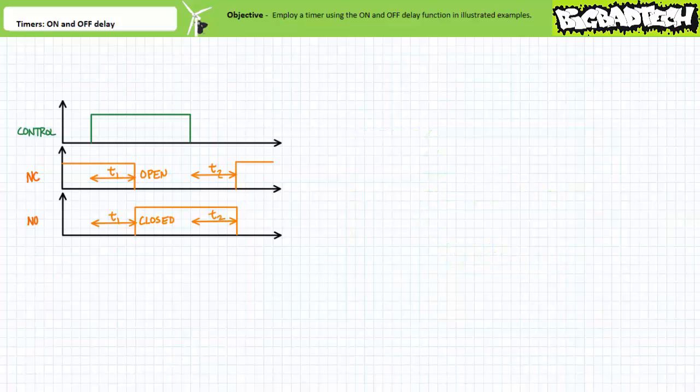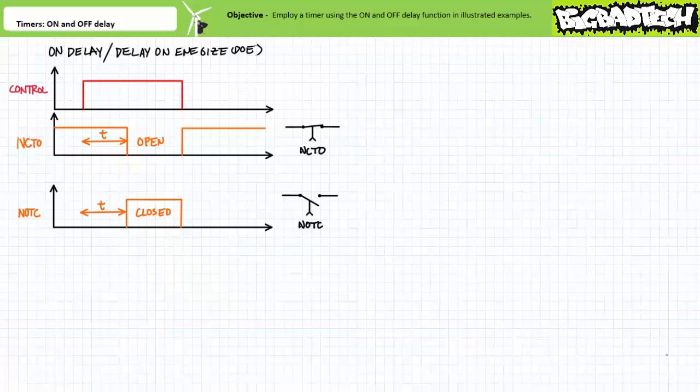Today's lecture deals exclusively with the on and off delay function, which should be a breeze because it's obviously a combination of the two previously discussed functions: on delay and off delay. Before we dive in, allow me to perform a brief walkthrough and review of common timer functions, comparing and contrasting their behavior. Repeated exposure is the best tactic because similar terms are employed for different functions, and it would be a horrible mistake to confuse one for another.